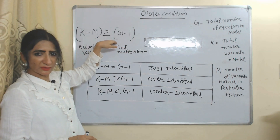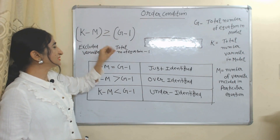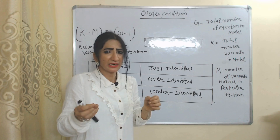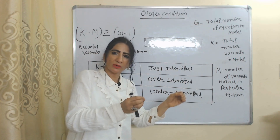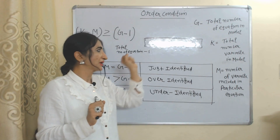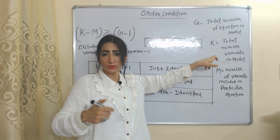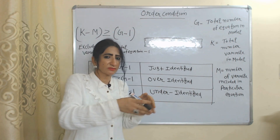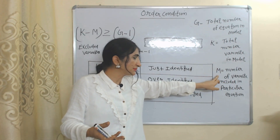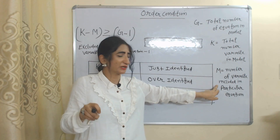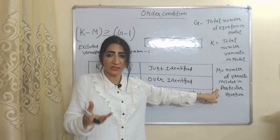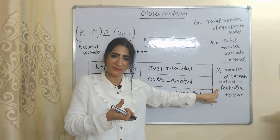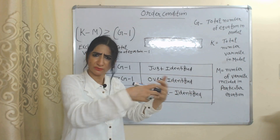This is the standard equation to represent the order condition. In this equation, G represents the total number of equations in the model — that is, how many total equations are included — and G will always equal the number of endogenous variables, which means dependent variables. K represents the total number of variables in the model, including both endogenous (dependent) and exogenous (independent) variables. M represents the number of variables included in the particular equation we are going to identify.